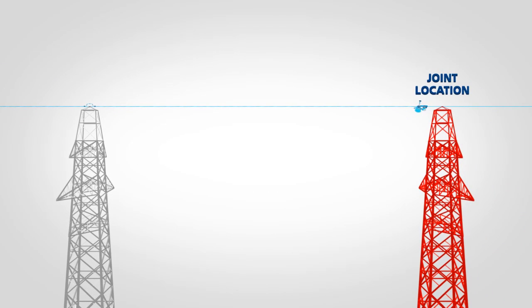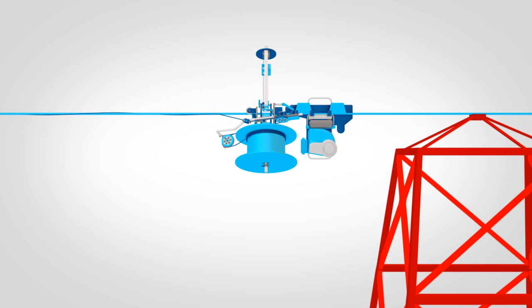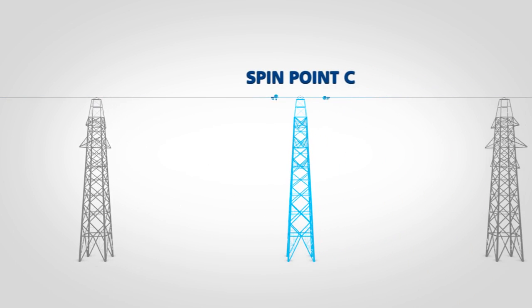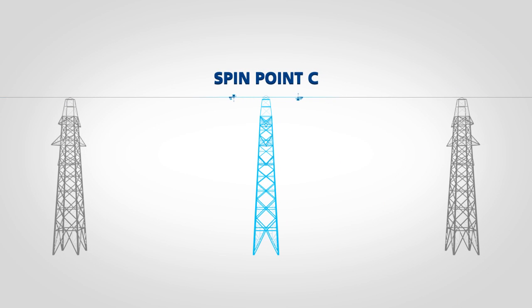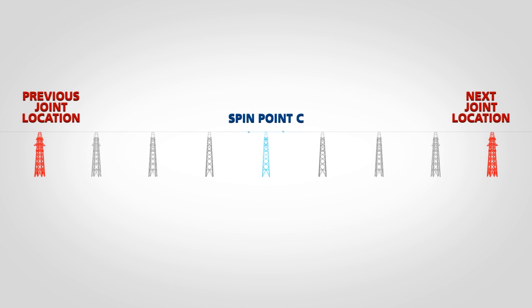Each wrapping machine may travel along several spans until it reaches a tower designated as a joint location. The cable drum will be almost empty at this tower. The installation then jumps several towers to the next spin point and again works outward in both directions. One machine heads back to the previous joint location while the other wraps in the direction of the next joint location.